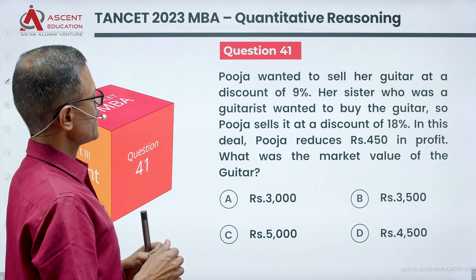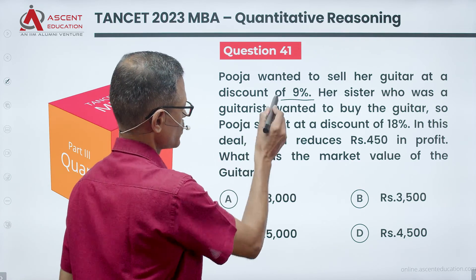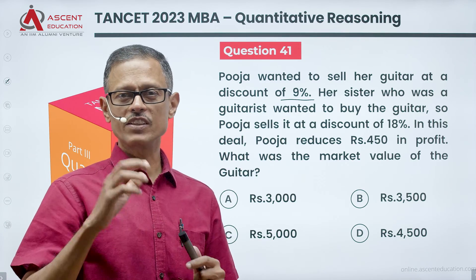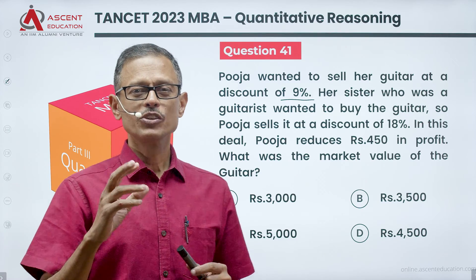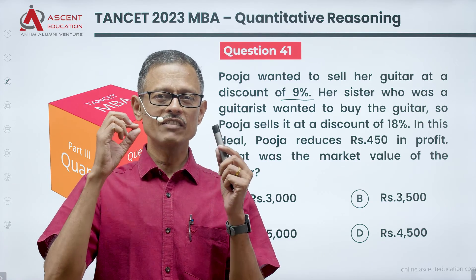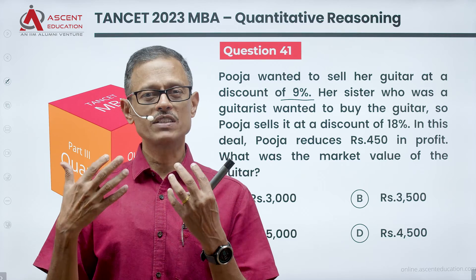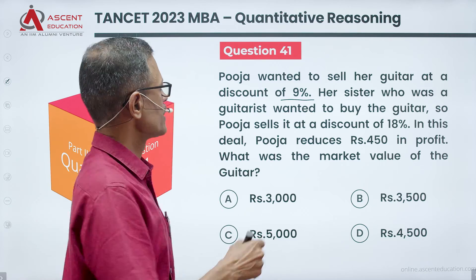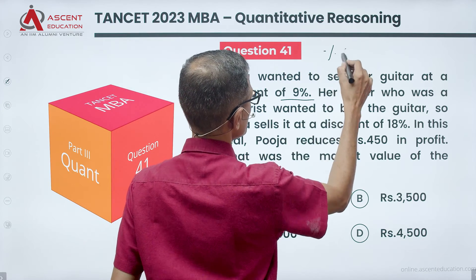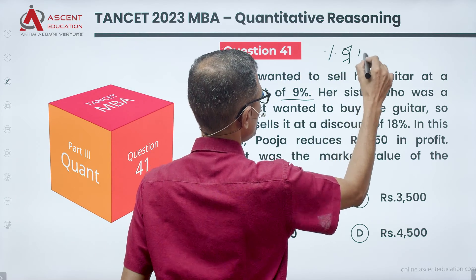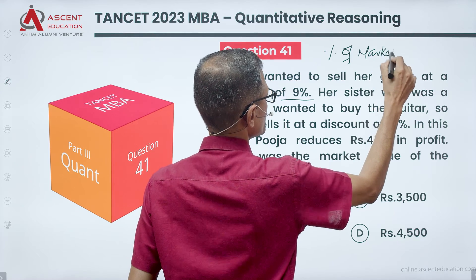Pooja wanted to sell her guitar at a discount of 9%. One important concept to be aware of: discount is a percentage of what? Discount is a percentage of the market value.